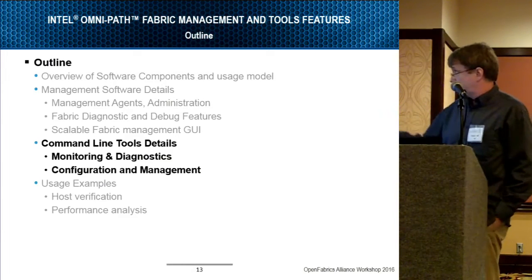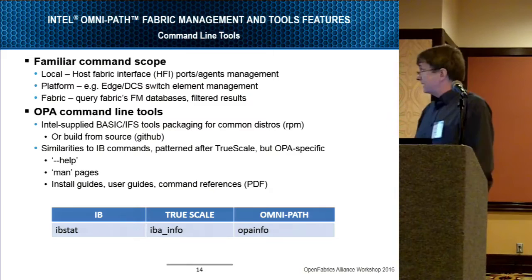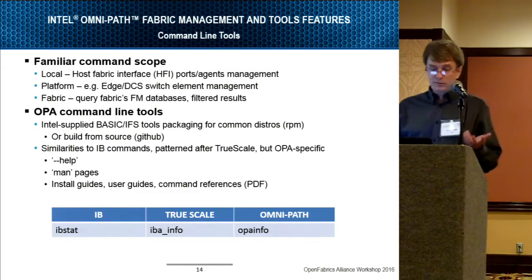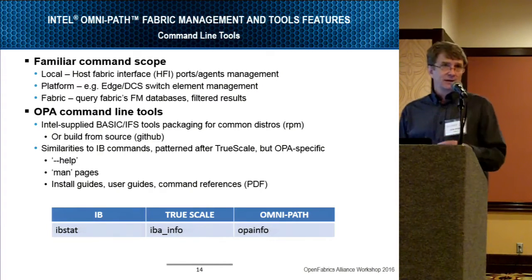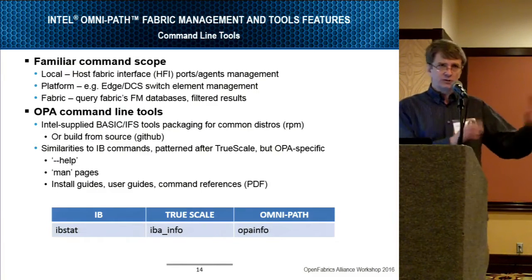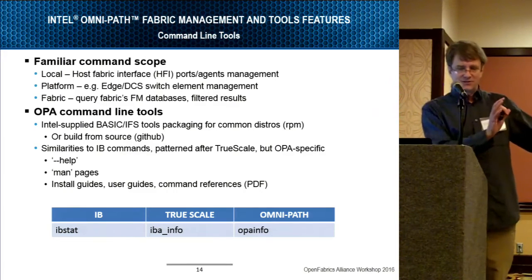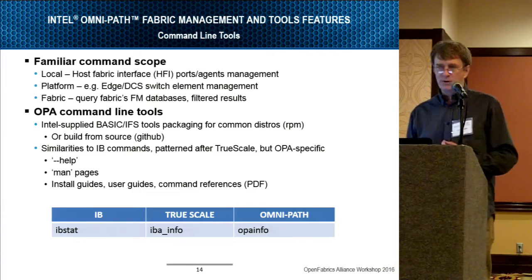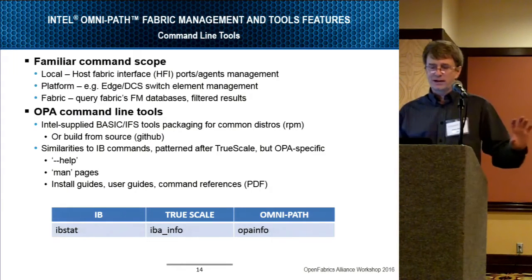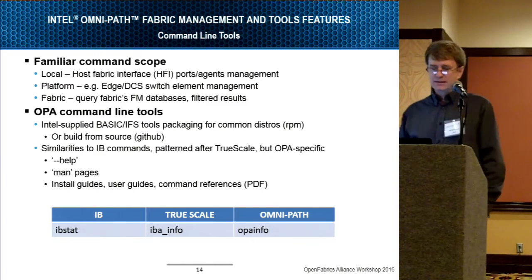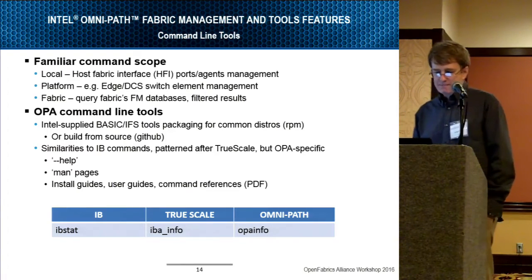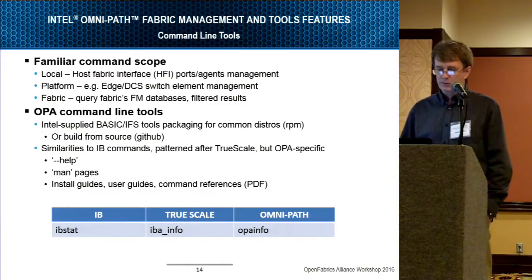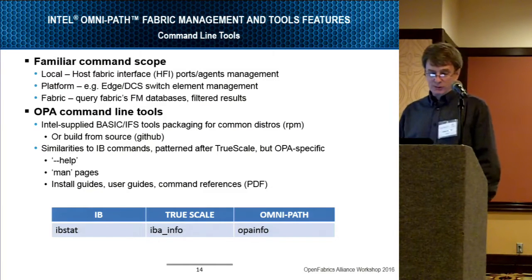Command line tools cover a local scope, a platform scope when talking about an edge switch or a director class switch — we have single switches with over 700 ports, and our standard pizza box has 48 ports while director class switches go much higher — and a fabric level scope which lets you look at the FM database filtered by your query and your privileges.